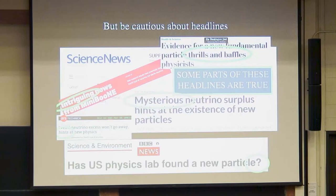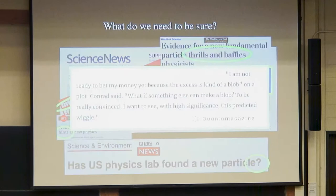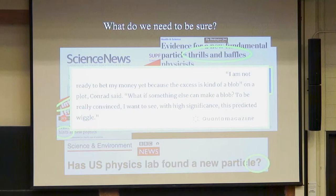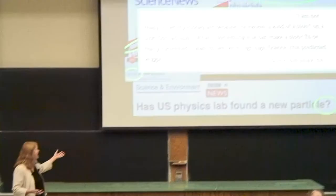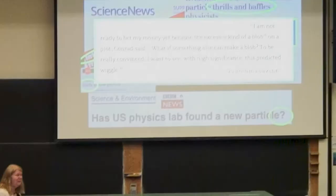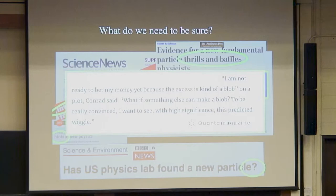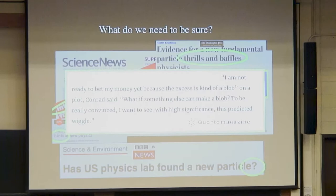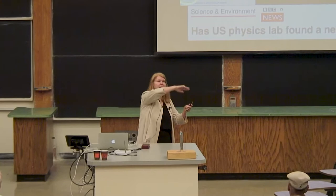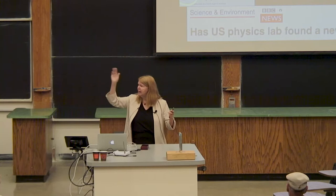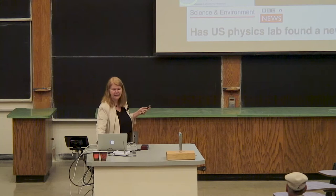Why am I not ready to call this a discovery even at 4.8 sigma? I actually got quoted explaining my caution: 'I'm not ready to bet my money on this yet because the excess is a kind of blob on a plot. What if something else can make a blob? To be really convinced, I want to see, with high significance, this predicted wiggle.' It's a plot that has a hump on it, but other things might cause a hump. What I really want to see at this particular new frequency is it go up and down and up again, because it's that up-and-down-and-up-again pattern that makes it a wave, an oscillation.